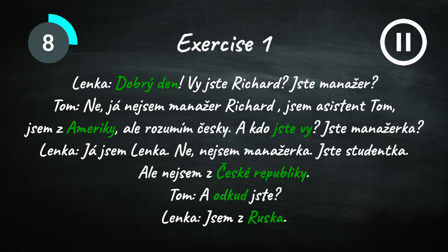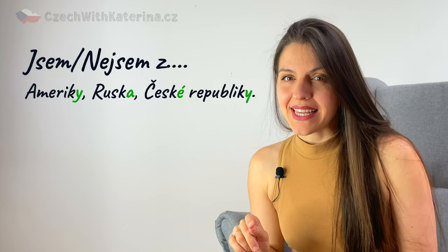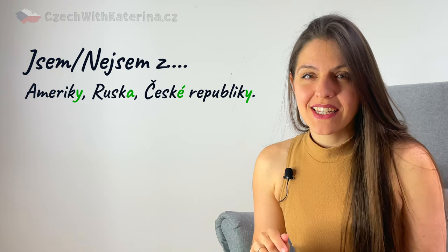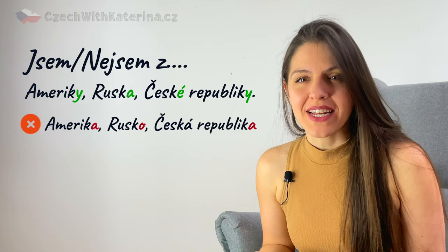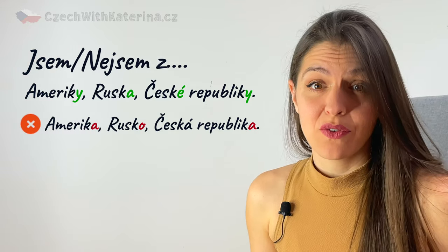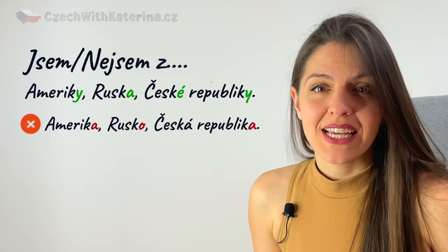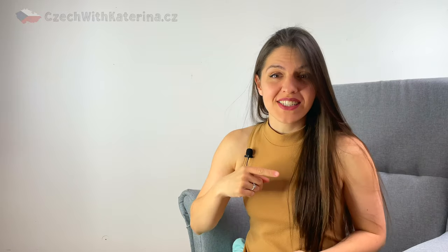Now let's see the answers. Did you write correctly Ameriky, Ruska a České republiky? A common mistake would be to write Amerika, Rusko a Česká republika. As we saw in the previous lesson, when you're saying that somebody is from somewhere, you must use the genitive case ending. If you're unsure why or this doesn't make sense to you, watch the previous lesson again.